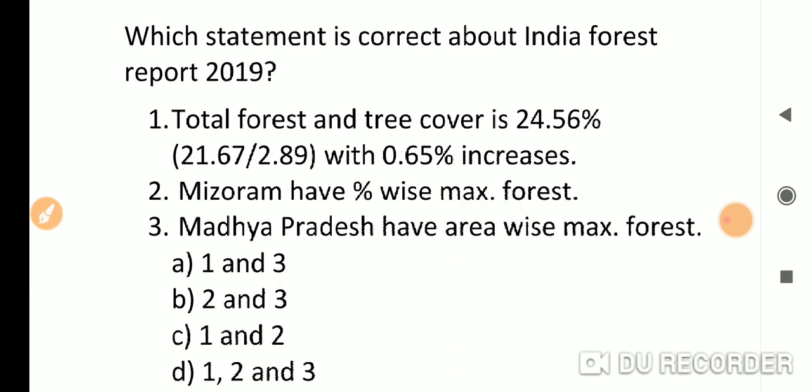Which statement is correct about Indian Forest Report 2019? Total forest and tree cover is 24.56%, of which forest is 21.67% and tree cover is 2.89%. This year there was a 0.65% increase. Mizoram has the maximum percentage-wise forest, and Madhya Pradesh has the maximum area-wise forest. So the correct answer is option B, all correct.